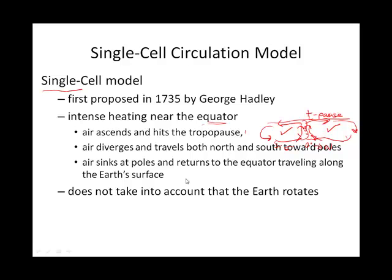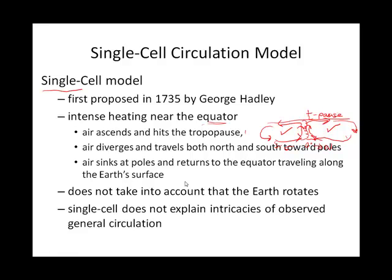It's actually a three cell model in each hemisphere, or six cell model, so three cell models in each hemisphere. And as we go from the single cell to the three cell in each hemisphere, then we can understand it matches up with a little bit better of what we observe.